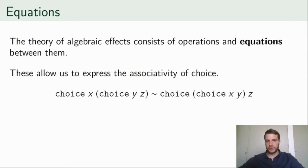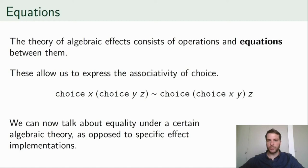In the original approach to effect handlers, the theory consisted of an effect signature and equations between operations. For instance, associativity of choice, which is what we wanted in the previous example, can easily be expressed with an equation. Using equations allows us to abstract away from concrete implementations.